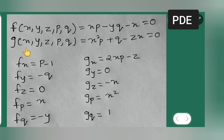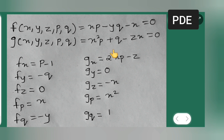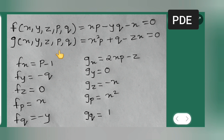Now differentiate g with respect to x: gx equals 2xp minus z. Differentiate g with respect to y: gy equals zero, since there is no y term. Differentiate g with respect to z: gz equals minus x. Differentiate g with respect to p: gp equals x squared. Differentiate g with respect to q: gq equals 1.